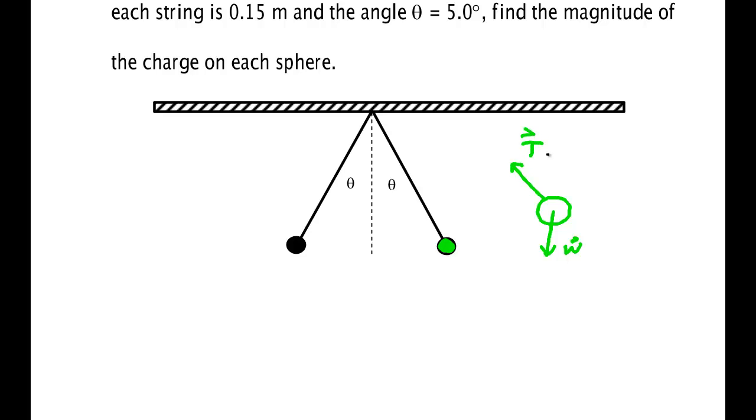And because these both have the same charge, call that charge Q, this charge is applying a repulsive force in this direction, call that F sub E, upon the second pit ball. And then I need to have a coordinate system. I'll draw that as my coordinate system, so this is X, this is Y, this angle here is theta, that angle is the same as this angle here, so that angle is theta.